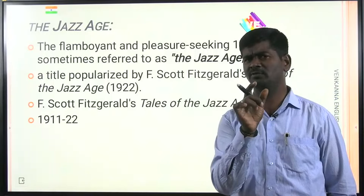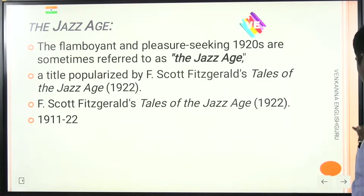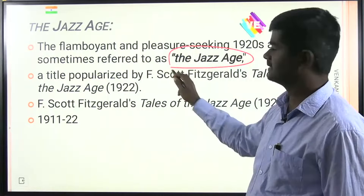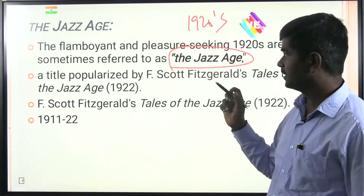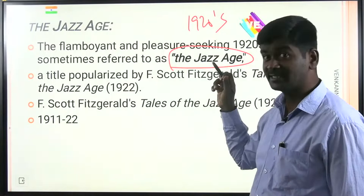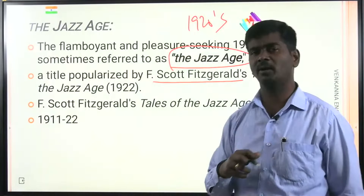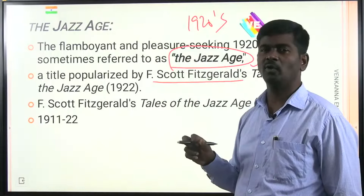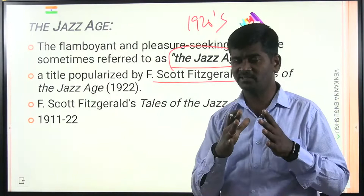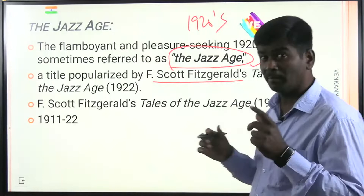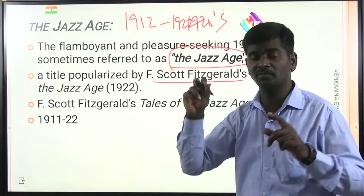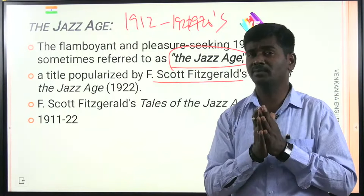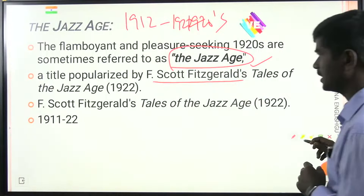The concept of the Jazz Age is associated with American literature. The flamboyant and pleasure-seeking 1920s are sometimes referred to as the Jazz Age. This title was popularized by F. Scott Fitzgerald, who composed the popular work 'Tales of the Jazz Age' (1922), from which the term was coined. The period from 1912 to 1922 is considered the Jazz Age, and there is a close connection between the Jazz Age and the Harlem Renaissance.